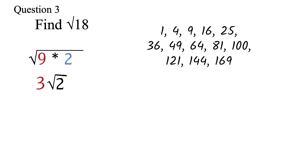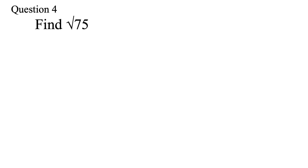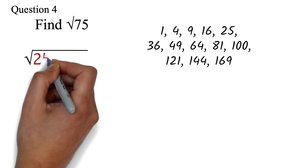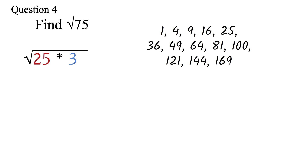Let's take a similar question so you can try your hands on one. Question 4: find the square root of 75. Please pause the video and try it out. As usual, the first thing to check is if 75 is a perfect square. Looking at our perfect squares, we can see that 75 is not a perfect square, so we cannot find the square root directly. We can write 75 as the perfect square 25 times 3, because 25×3=75. Now we can find the square root of 25, which is 5. Since 3 is not a perfect square, we leave it under the root sign. So our final answer is 5√3.